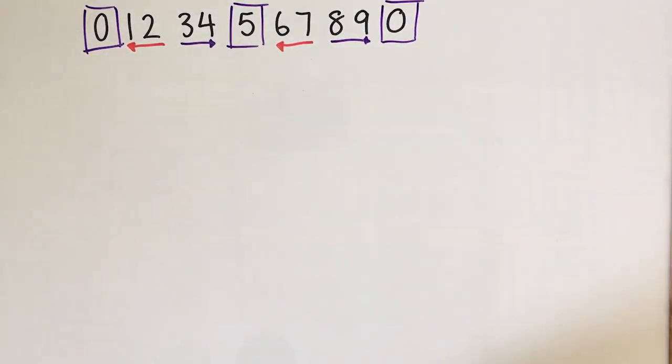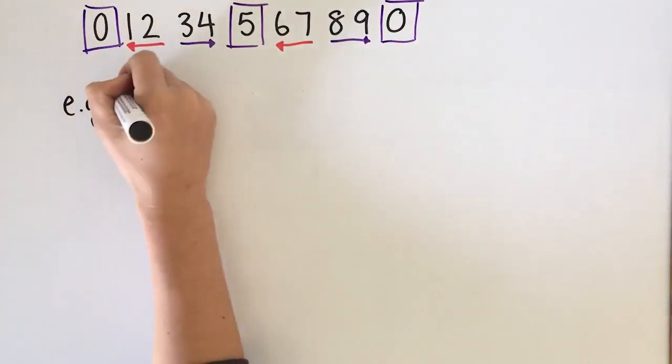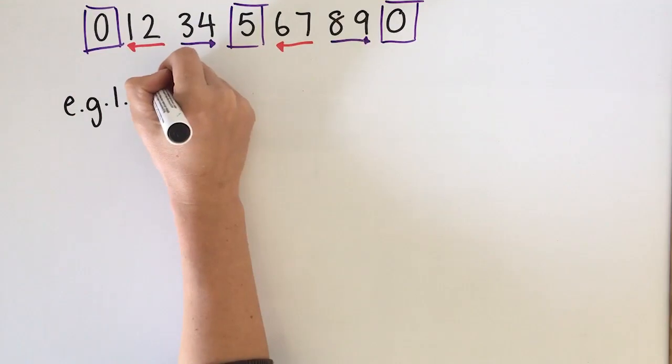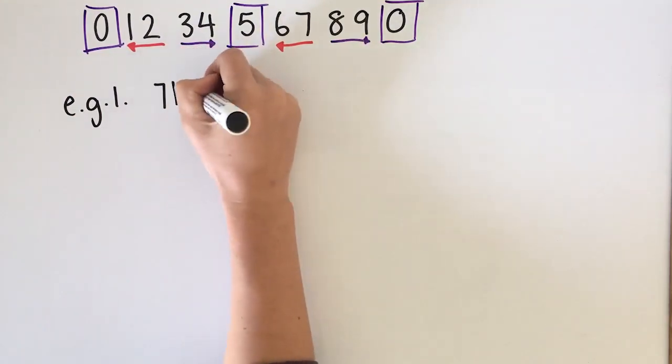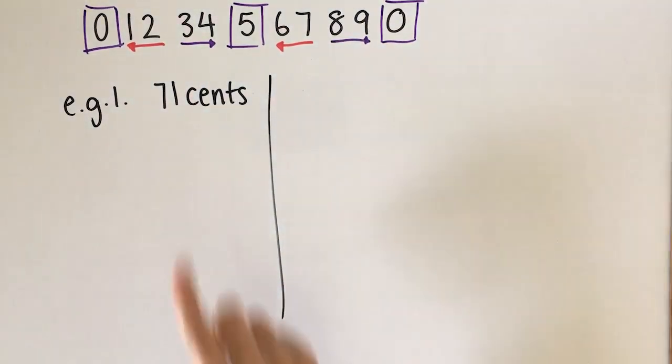All right so I've drawn our little cheat sheet here to help us but we're going to do our three examples here now. Our first example is going to be 71 cents. That's our first example. We need to look at our decimal place.